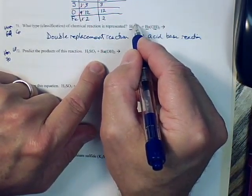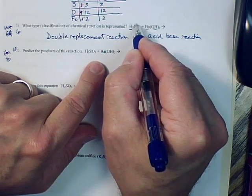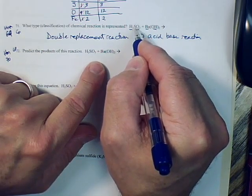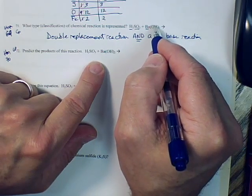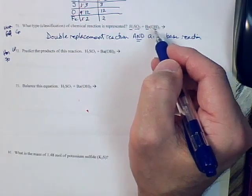So we can see this is a sulfite ion. If you're in CP class, you'll look that up on the common ions list. If you're in an honors class, you're supposed to have memorized the polyatomic ions, including sulfite. And then the same is true for this hydroxide ion. You can look it up in CP, you're supposed to have memorized it in honors.